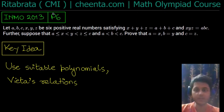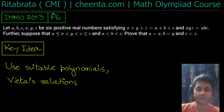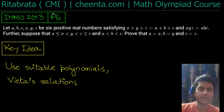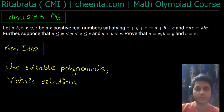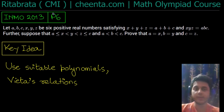Let's begin. We are given that a, b, c, x, y, z are six positive real numbers satisfying: x + y + z = a + b + c, xyz = abc, and the inequality a ≤ x < y < z ≤ c with a < b < c. We have to prove that a = x, b = y, and c = z.